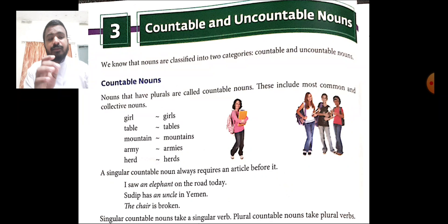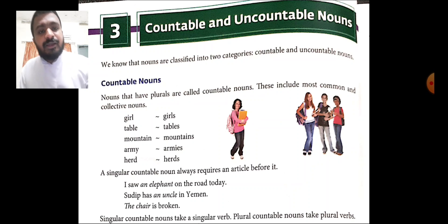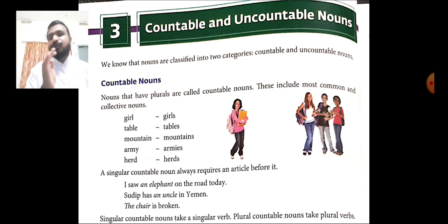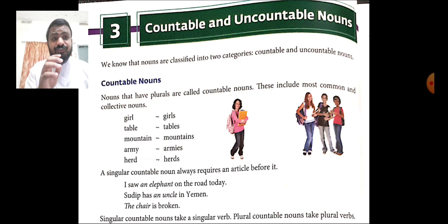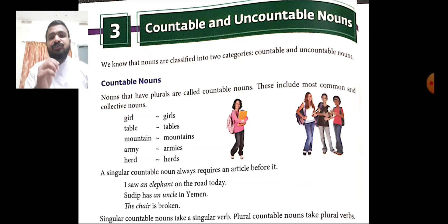We have five rules concerning countable nouns. Suppose you have a pencil — you can mark each rule. The first rule is: a singular countable noun always requires an article before it. You know about the articles a, an, and the. We need to use at least one article with a singular countable noun. For example: 'I saw an elephant on the road today.' 'The chair is broken.'